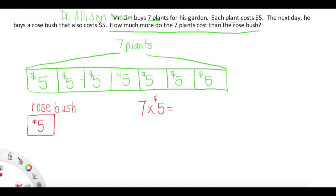We can do skip counting by fives seven times, which looks like five, ten, fifteen, twenty, twenty-five, thirty, thirty-five. Seven times five, my friends, is thirty-five. That means that thirty-five dollars were spent on the plants.